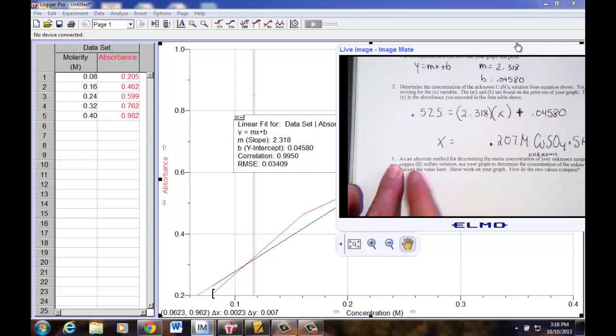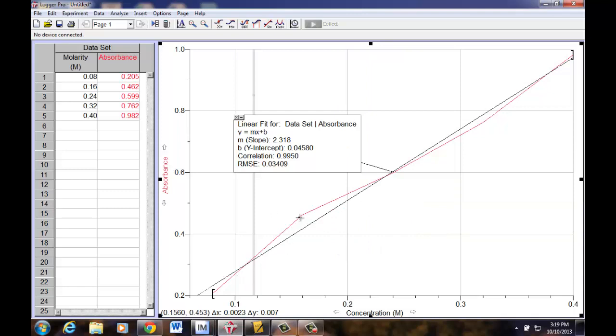Now let's kind of process number three. As an alternate method for determining the molar concentration of your unknown sample, what we can do is use our graph to determine the concentration of the unknown. Record the value here, show the work on your graph, and how do the two values compare. So here's what I'm after. Notice that my red line is my actual data. When I place my cursor on the red line, I want you to bring your eyes down here. It's telling you the X and the Y values. Bring your cursor to where the Y value matches your absorbance reading. Mine was 0.525, so I'm just gently sliding it until the Y matches 0.525. On my red line, 0.525 on my line, not the best fit slope, but the line that you actually generated. It's going to take a soft touch to kind of move around.